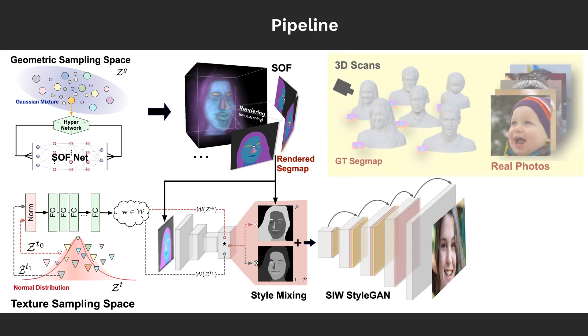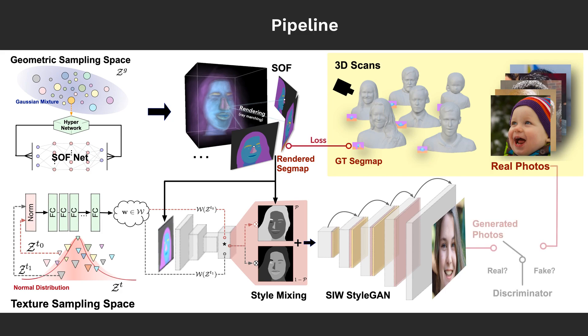Our softGAN and sieve are trained separately. To train softGAN, we render multi-view segmentation maps from synthetic portrait scans and use real photos for sieve training.